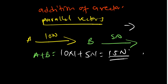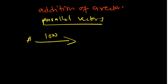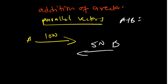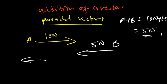What if the direction is different? Let's say vector A is pointing toward east and vector B is pointing toward west with 5 newtons. Since vector B is pointing toward west, we assign it as negative. So it is going to be 10 newtons plus negative 5, giving us A plus B equal to 5 newtons.